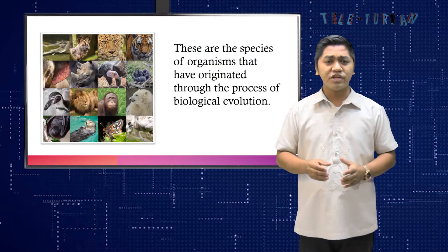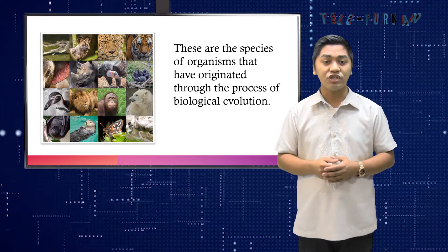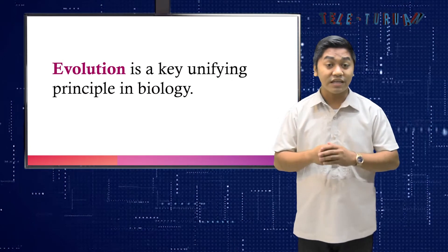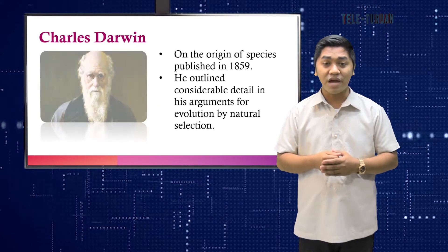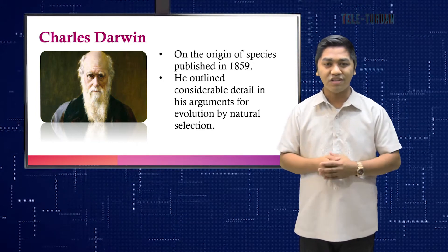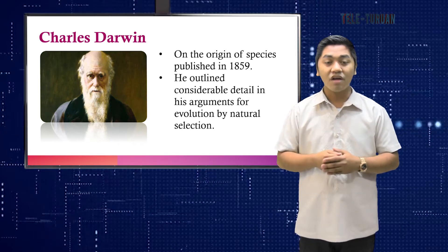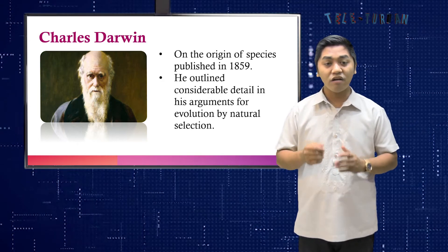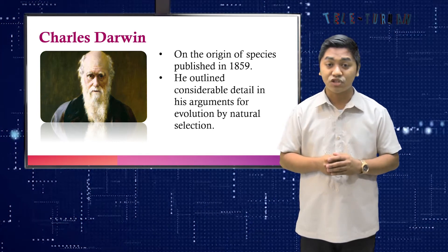These are the species of organisms that have originated through the process of biological evolution. Take note, evolution is a key unifying principle in biology. The evidence for evolution is compelling and extensive, gathered supporting the theory of evolution. According to Charles Darwin, in his book On the Origin of Species, published in 1859, he outlined in considerable detail his arguments for evolution by natural selection.